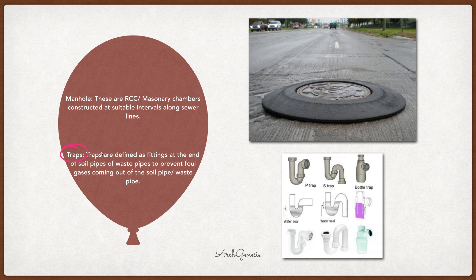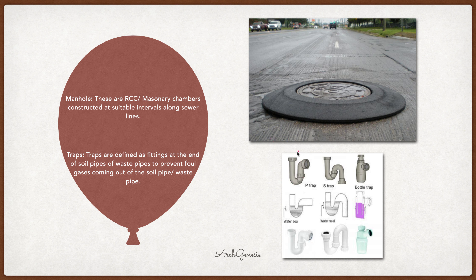Traps are defined as fittings at the end of a soil pipe or waste pipe to prevent foul gases coming from the soil pipes. For example, in your toilet you have a water closet — when waste is generated there, it flows away, but water pressure prevents gases from coming back. You may have noticed a curvilinear shape in the toilet — when you flush, fecal matter flows away and does not come back. This is called a trap. There are different types: P-trap, S-trap, bottle trap, and Q-trap, which we will discuss in the next video.